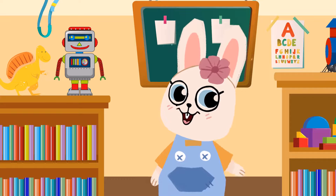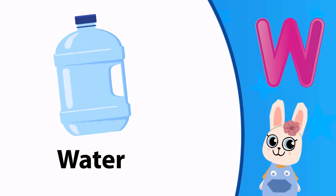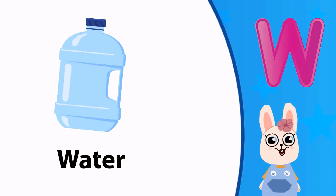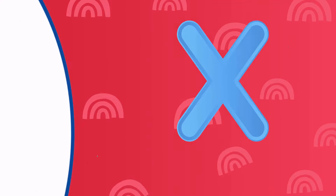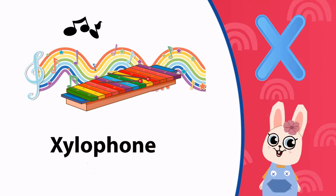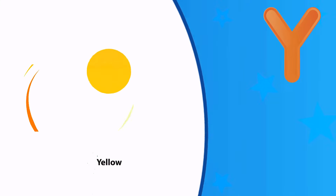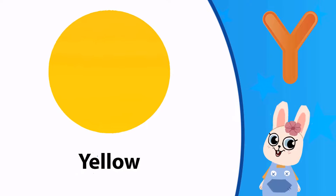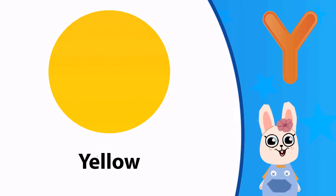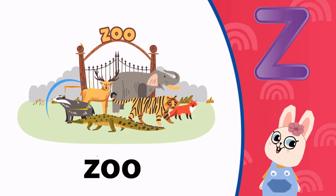Loving the way you sing! W. W is for water. X. X is for xylophone. Y. Y is for yellow. And Z. Z is for zoo.